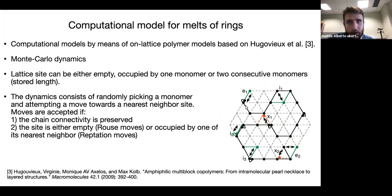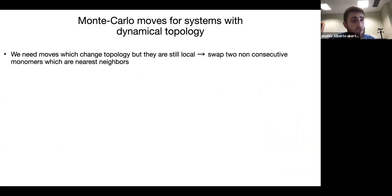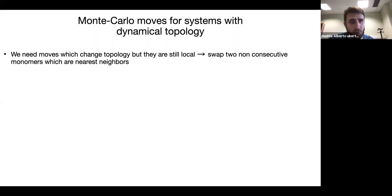The problem with this computational model is that it preserves the topology of the system. A new Monte Carlo move was needed — a scheme that takes into account the change in topology due to the action of topoisomerase. A local move was required because the dynamical properties of the systems needed to be studied. The idea was that swapping two non-consecutive monomers that are nearest neighbors on the lattice could do this job.